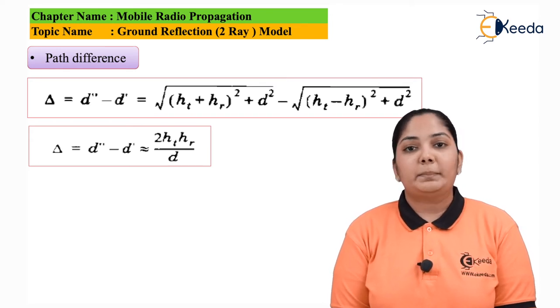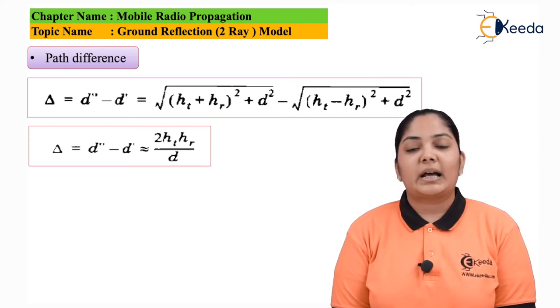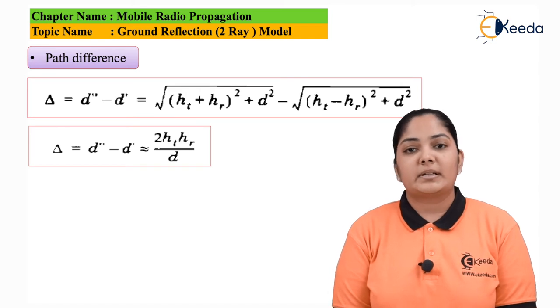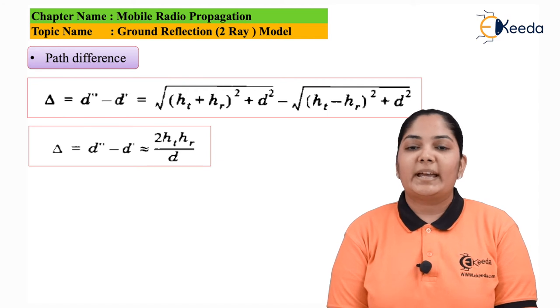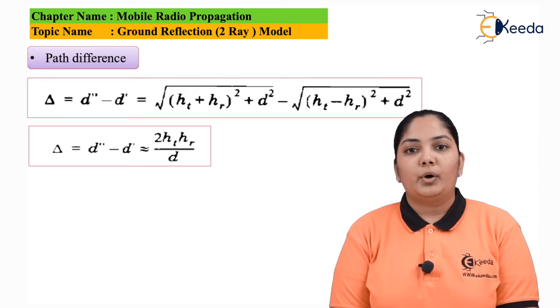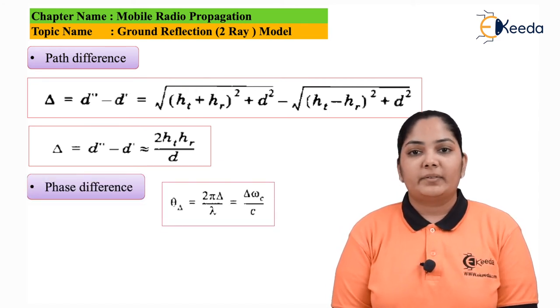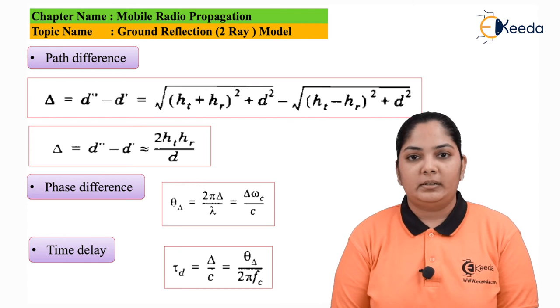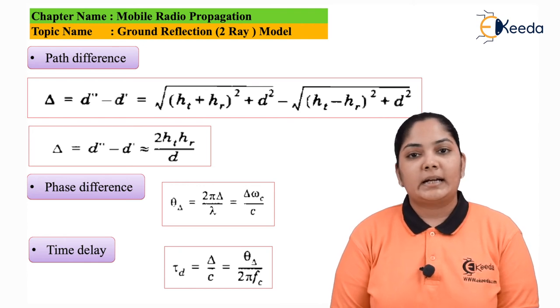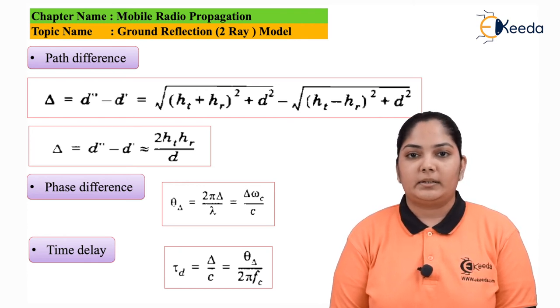These ht plus hr and ht minus hr are the relative heights of the transmitters and the receivers. Eventually delta is given as 2 hr ht upon d. The phase difference is given as delta omega c upon c. Finally, we have time delay which is given as Td which is delta upon c. This is given as theta delta upon 2 pi fc.